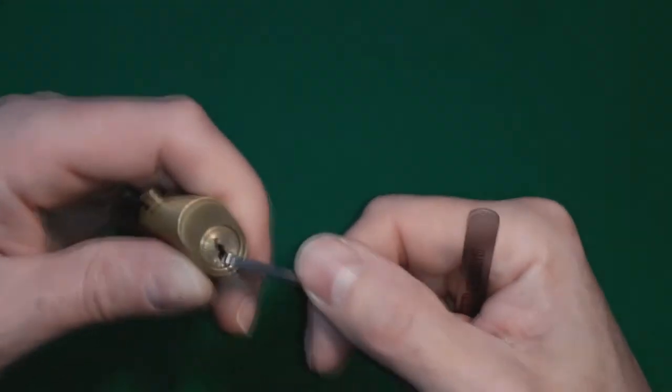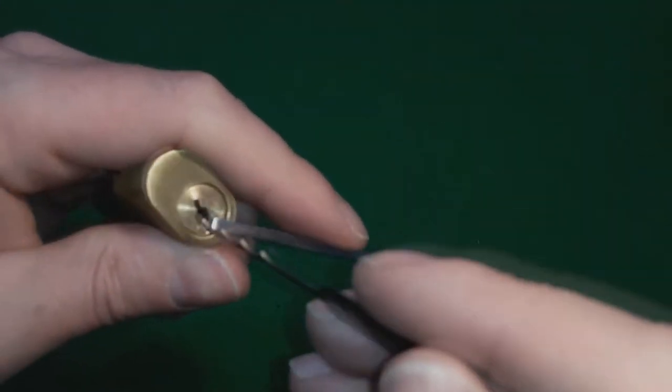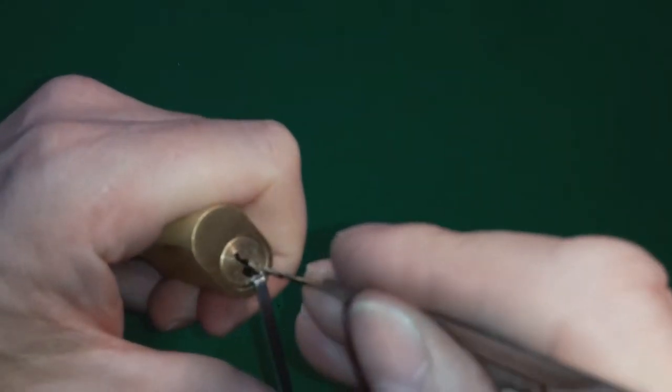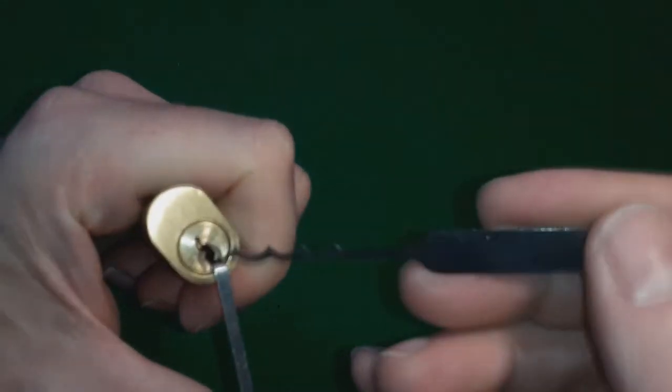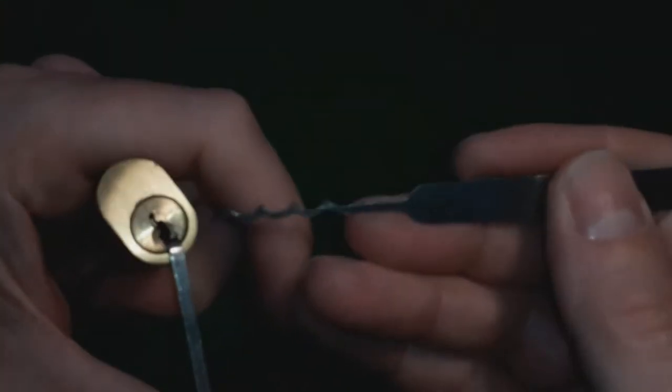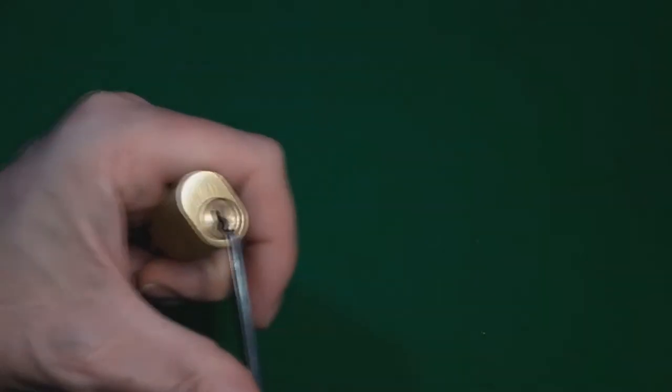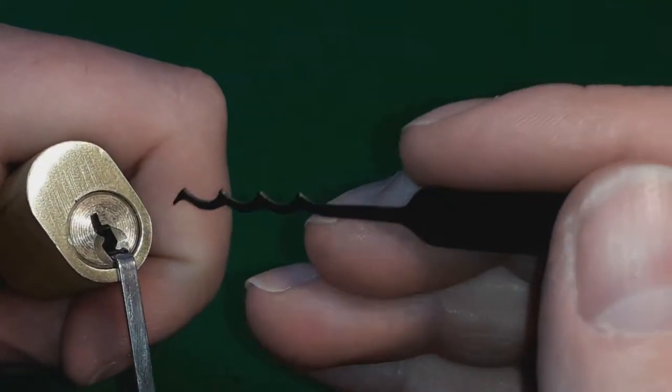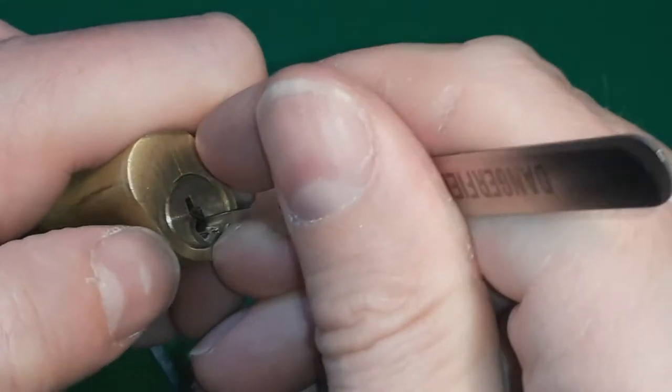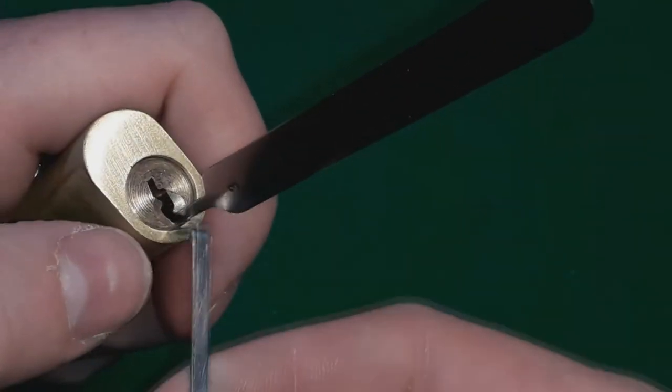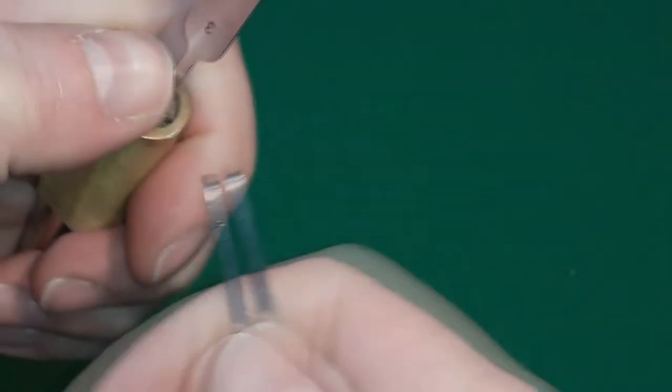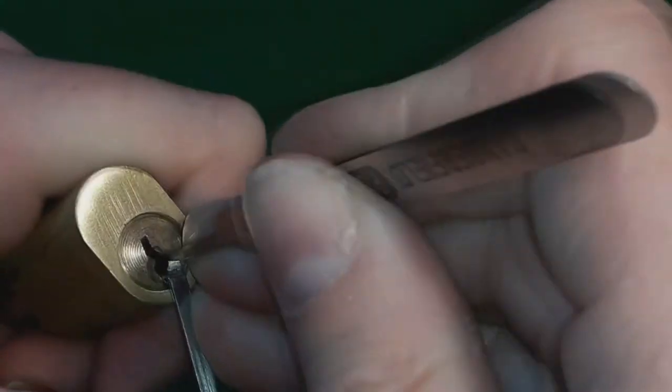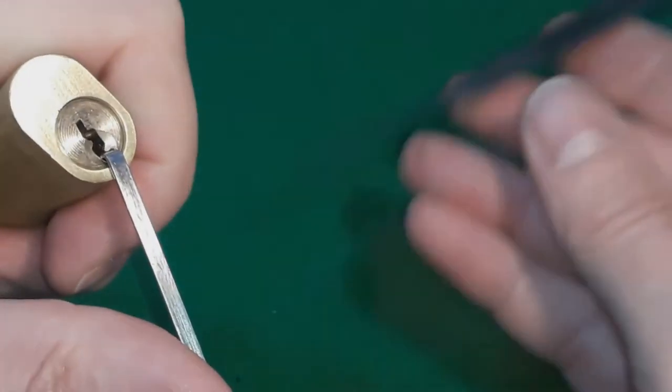So let's have a go with the Dangerfield. In fact, I'm going to pick it counterclockwise. So instantly we're having trouble getting the Dangerfield Bogota in here. It's got quite steep peaks, so I'm just going to put a bit of a zoom on this. It's got quite deep peaks, so it's having trouble getting in. Even if I try to get it in first, and then I try to put in the tension wrench, it's just catching. And it's just not going to go anywhere, so the Dangerfield's out.